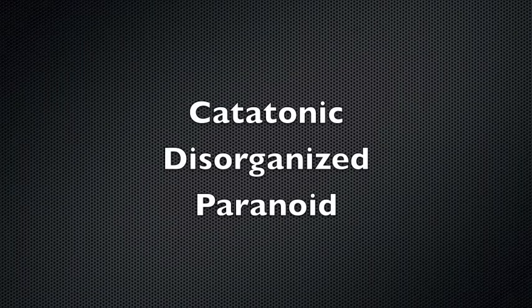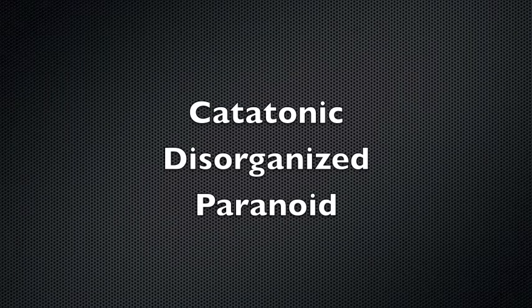The three forms of schizophrenia we're going to focus on today are catatonic, disorganized, and paranoid. They vary in severity; however, each is similar in the fact that people experience some distortion of reality.